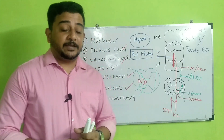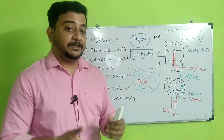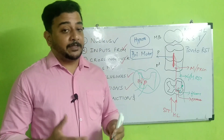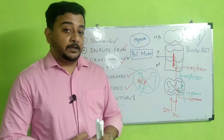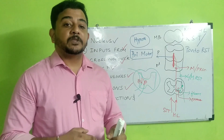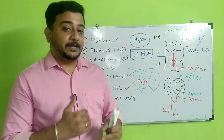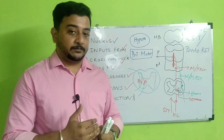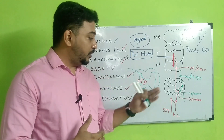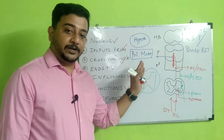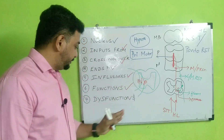Apart from maintaining posture by influencing the extensors of the human body, the reticulospinal tract also brings about locomotion, where flexor and extensor activity is needed repeatedly in a cyclic manner. This is called reciprocal activity, and it is brought about by the influence of the reticulospinal tract on the internuncial neurons.